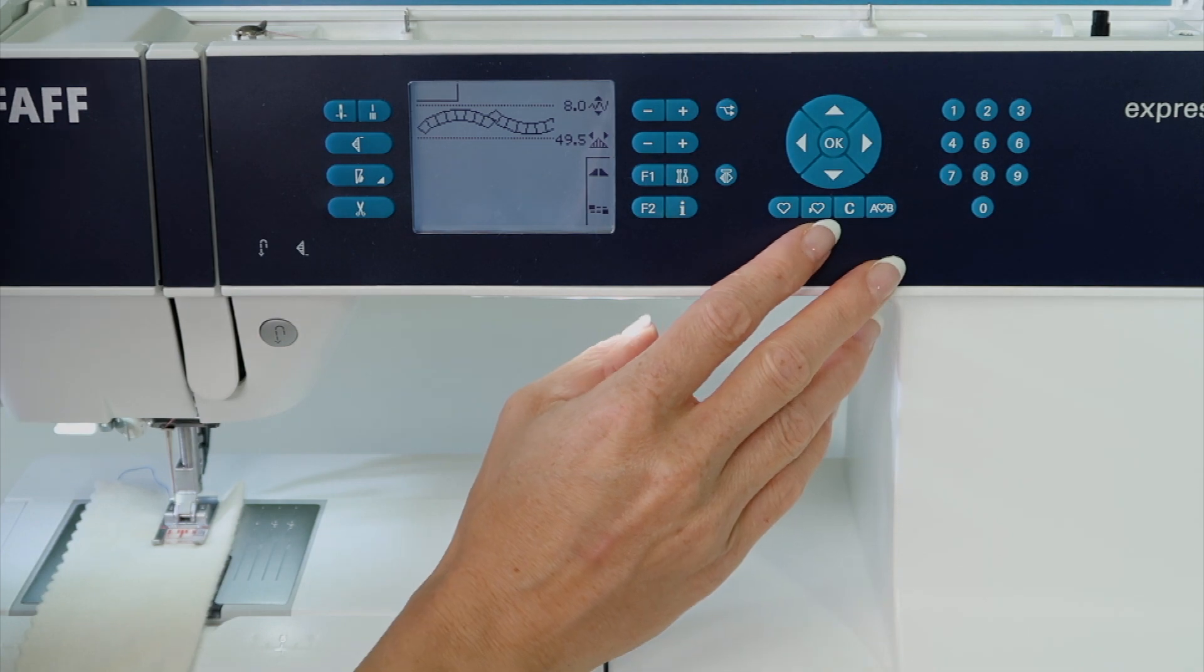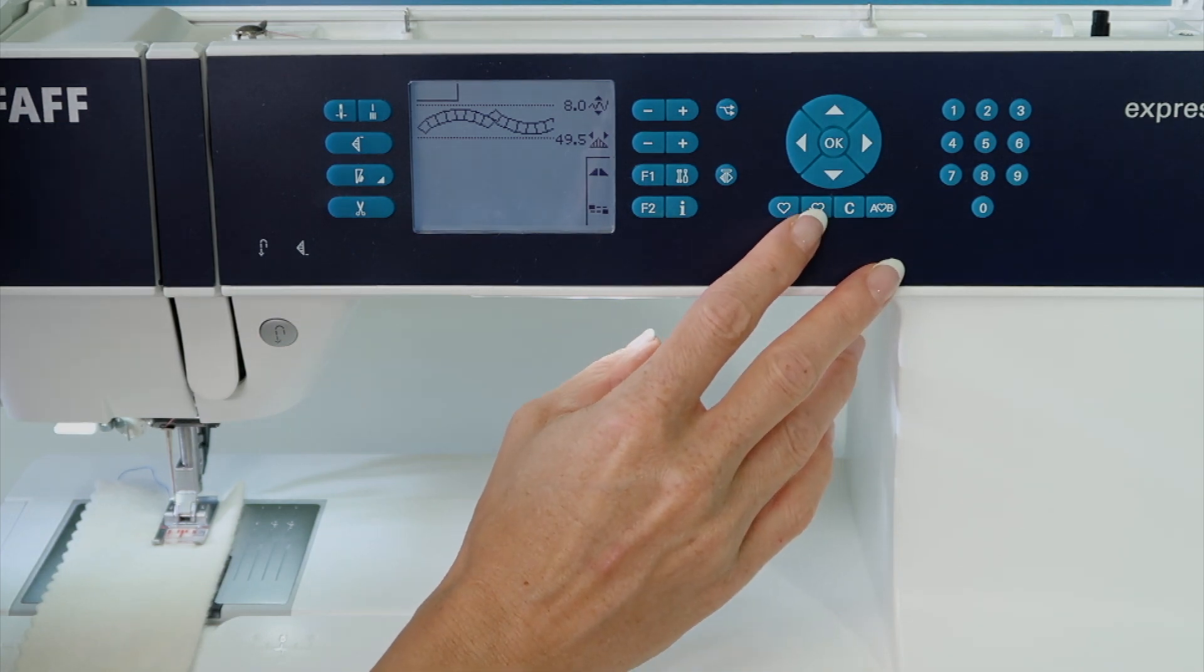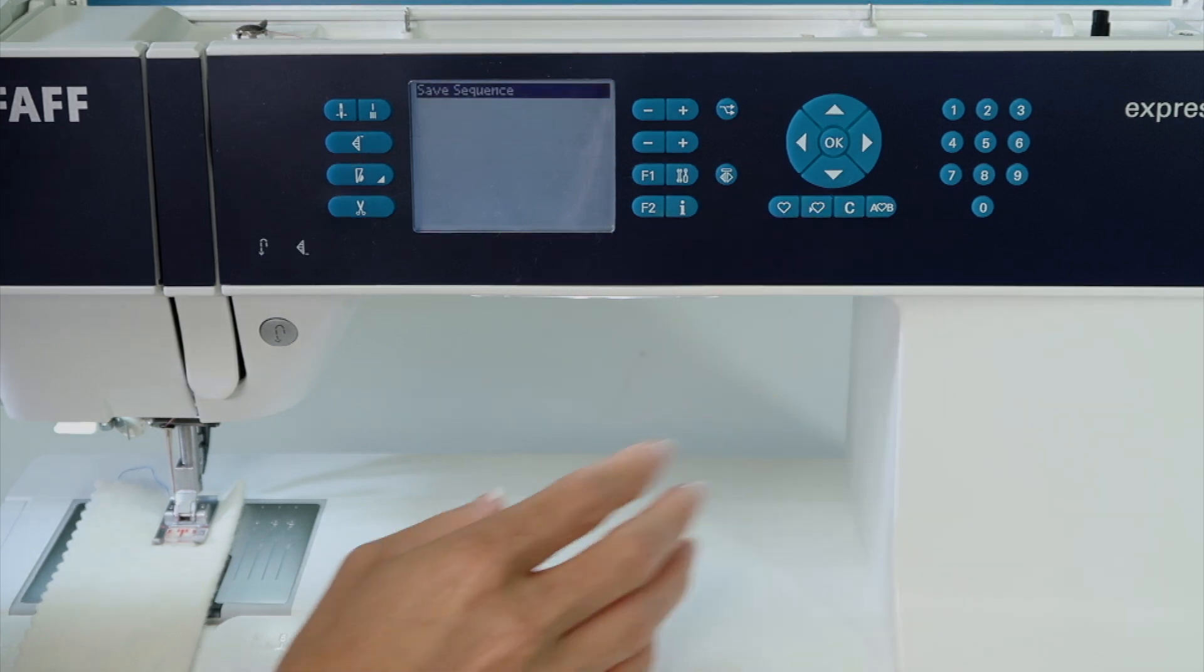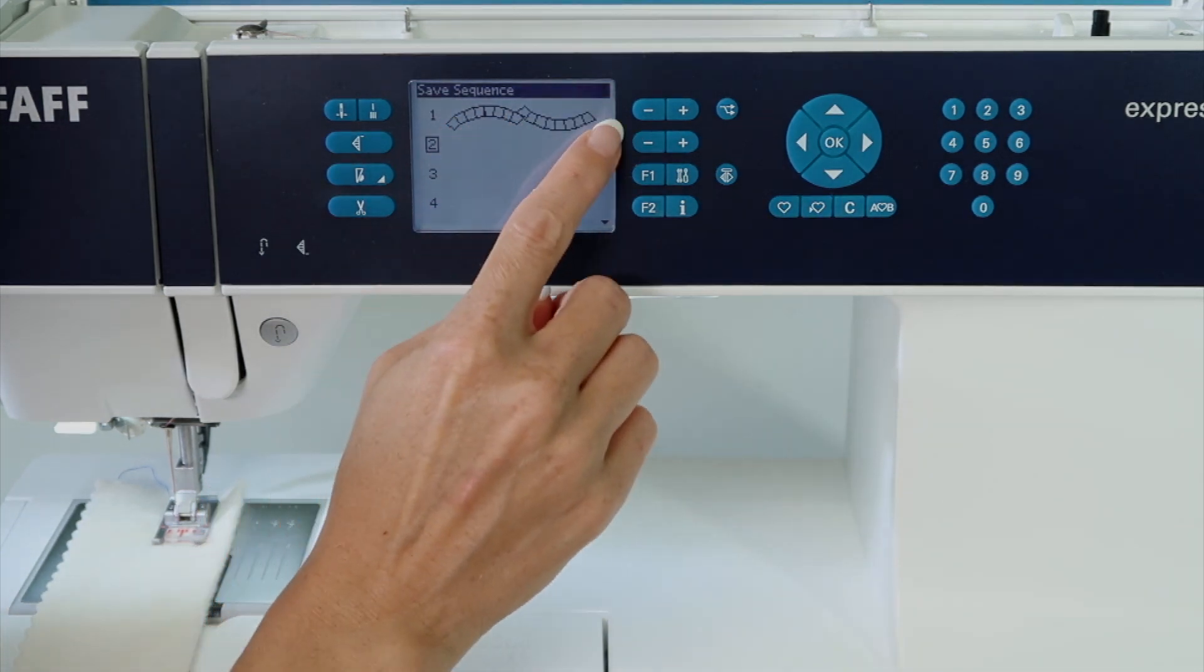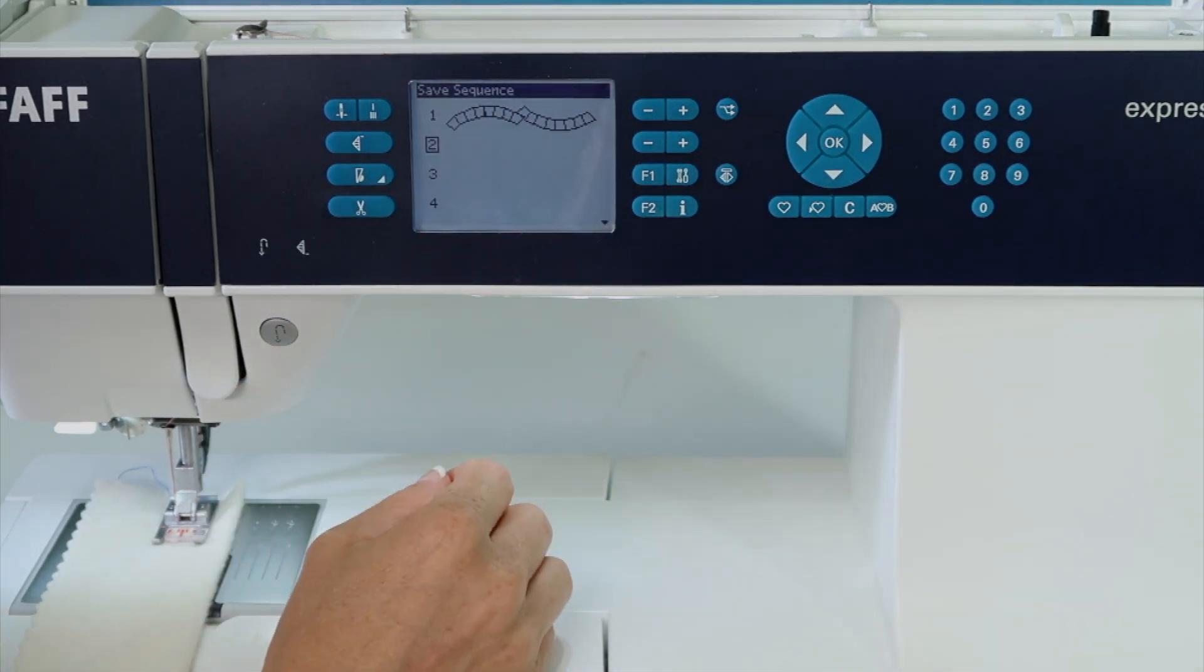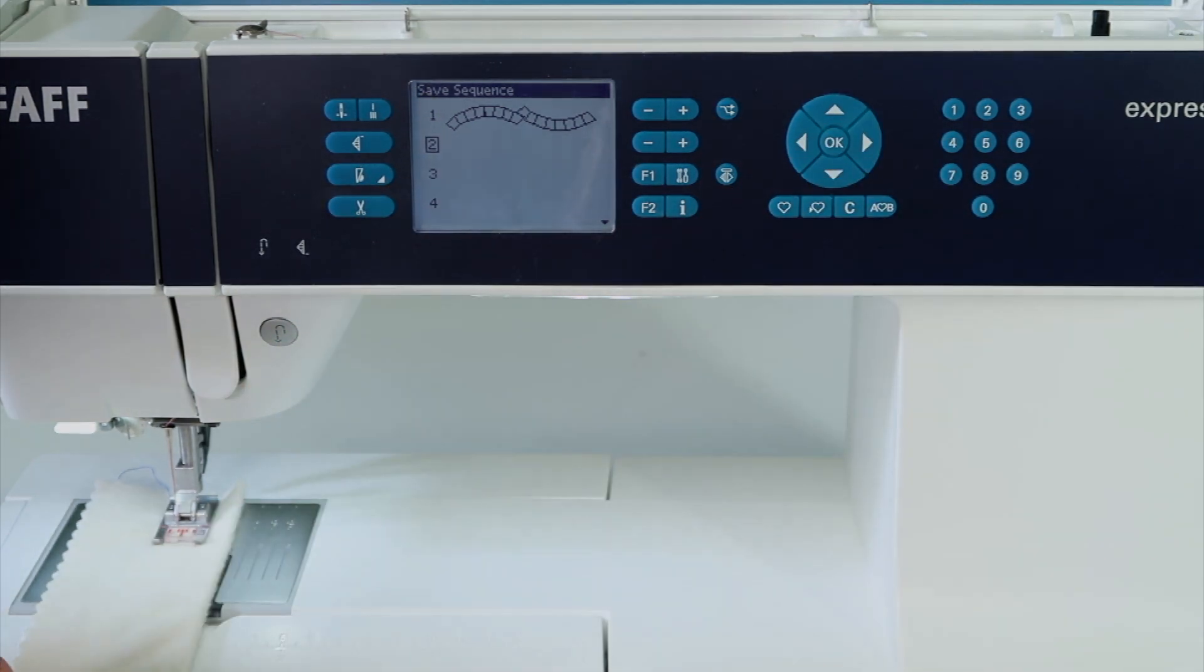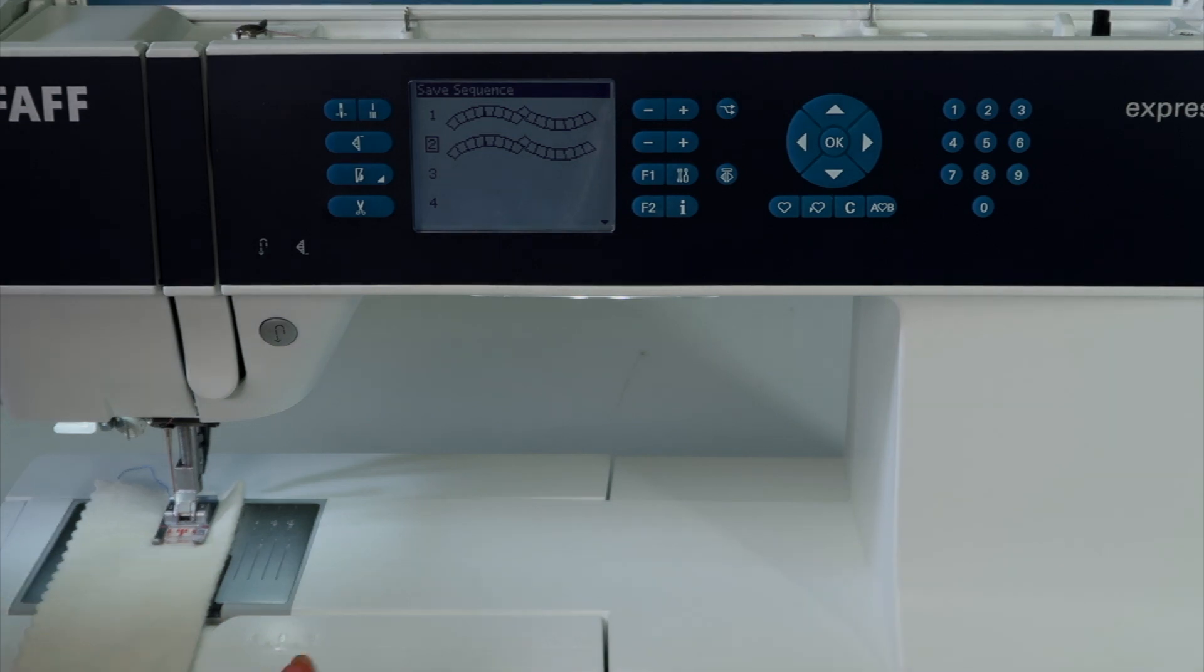If you find a stitch that you absolutely love, you can save that into the machine's memory. Where the heart with the arrow pointing into it, it will allow us to save that sequence. I actually already put one of these in memory, and number two is highlighted, so if I put it there, it will save that sequence again.